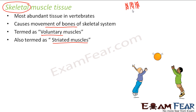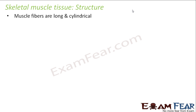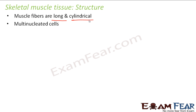Now let us look at the structure of a skeletal muscle tissue. The muscle fibers in skeletal muscle tissue are generally long and cylindrical. These are multi-nucleated cells — meaning each cell has multiple nuclei. Multi means many, nucleated means nucleus, so a cell with multiple nuclei is called multi-nucleated. So the cells making up the skeletal muscle tissue have many nuclei and are generally long and cylindrical.